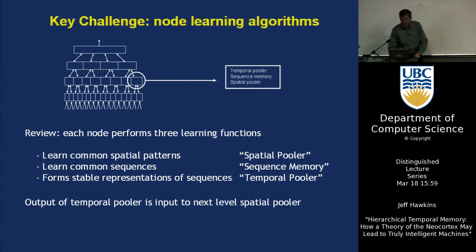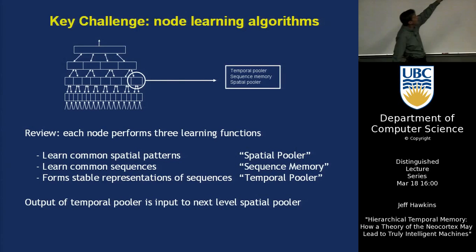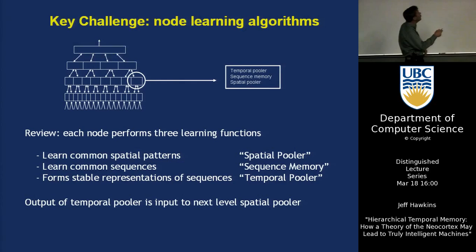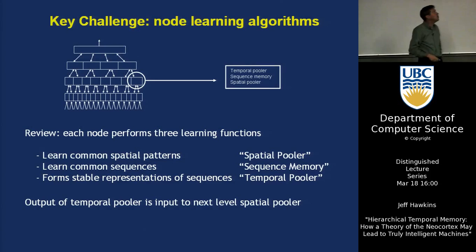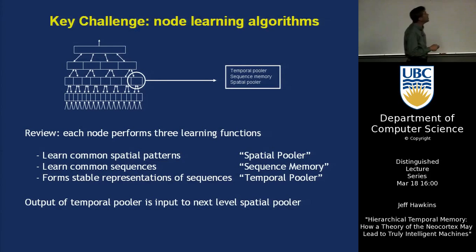The key challenge we've had — the most difficult thing — is these core learning algorithms. Just to review: we're talking about what's happening in a particular single node, a little part of the cortical sheet in one region. We have to learn common spatial patterns — we use the term 'spatial pooler' for that, taking different spatial patterns that are similar and pooling them together. Then we learn common sequences — we call it sequence memory. Then we form stable representations of sequences — we call that temporal pooling.